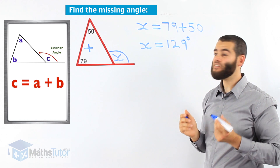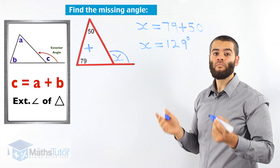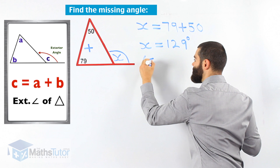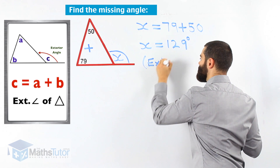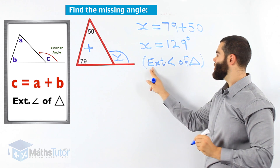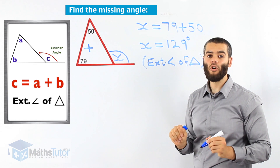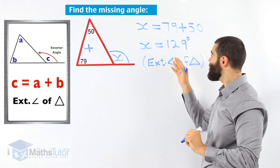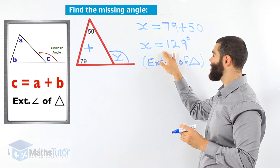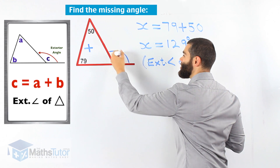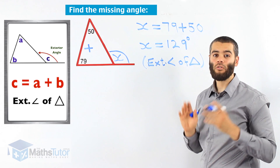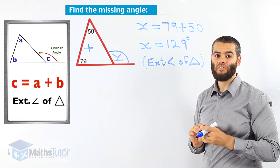What is our reason? We use the exterior angle of a triangle concept. We write our reason: exterior angle of a triangle. That's the reason for x being 129 degrees. We justified our answer, we gave our reason — our answer is 129 degrees, and our reason is exterior angle of a triangle.